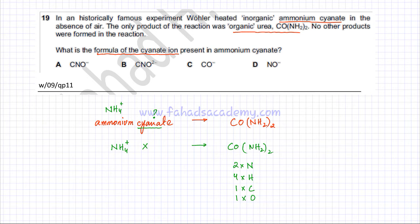If you look at the products, although there are two nitrogens, there are only four hydrogens, so you can only make one ammonium ion using two nitrogens and four hydrogens. In this formula of ammonium cyanate, there's only going to be one ammonium ion in it.